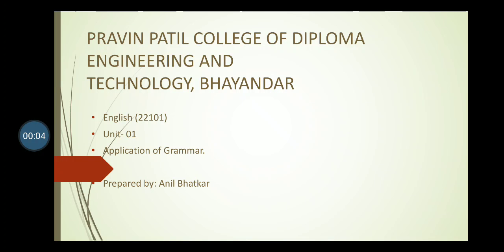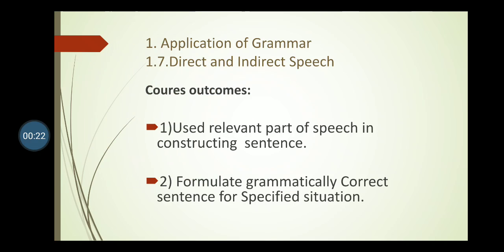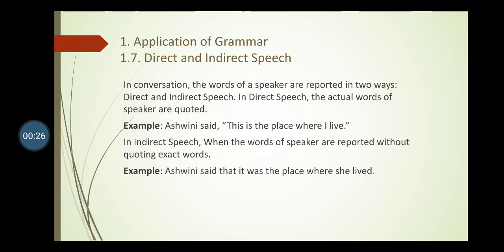Hello guys, today is the last video of unit number 1.7 - direct speech and indirect speech. In this video we are discussing all 20 sentences as exercise. Before that, we discuss the course outcomes. The examination course outcome is very important. Unit 1.7, that is called direct speech and indirect speech, it will be asked in the examination in question number 5P for four marks: convert direct to indirect.